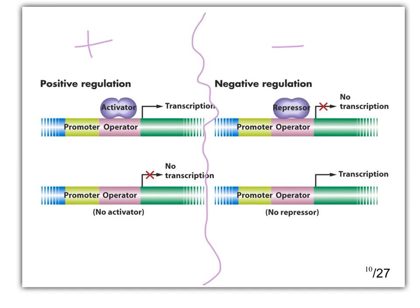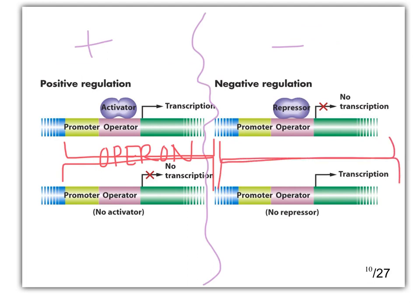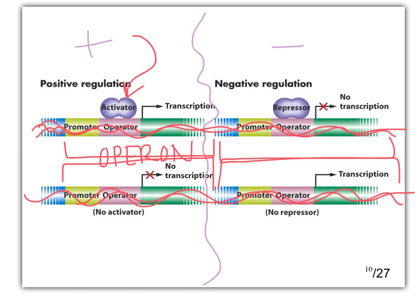Our operon structure: promoter, operator, gene, gene, gene — that's the operon. In positive regulation, we see something binding here. A protein binds to DNA and transcription goes on. In positive regulation, if there's no activator, there's no transcription. In negative regulation, a DNA binding protein binds the operator and turns it off.